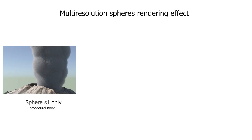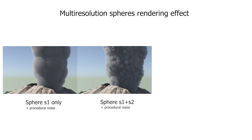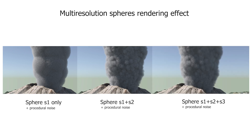Here we compare the rendering of the plume with only the big spheres of scale 1, the spheres of scale 1 and 2, and the spheres of scale 2 and 3. On every rendering, a procedural noise adds some details.